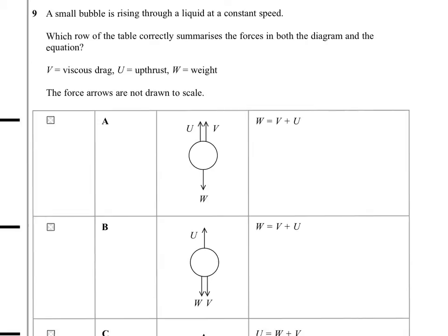Question 9. A small bubble is rising through a liquid at a constant speed. Which row of the table correctly summarises the forces in both the diagram and the equation? In these diagrams, V is viscous drag, U is up thrust, and W is weight. So we know that U acts upward. And we're told that the bubble is rising. So if it's heading up, drag will be acting against that motion, so it'll act down. We know that weight acts down. So we're looking for the up thrust acting in the upward direction, and both the viscous drag and W acting in the downward direction.